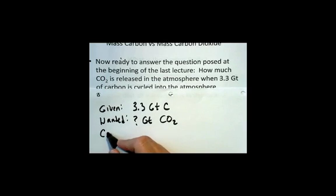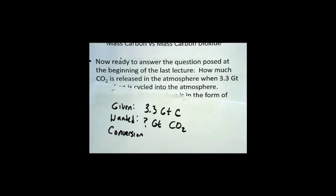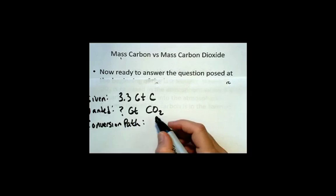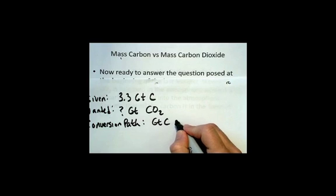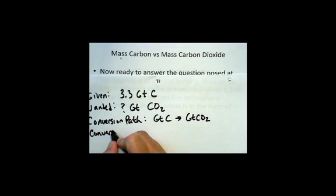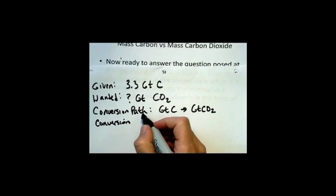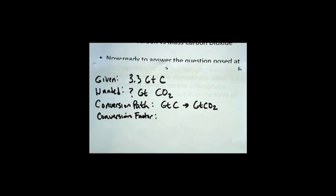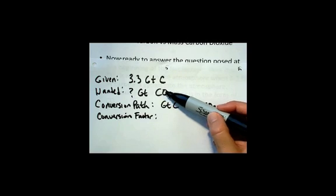We're going to have to just do a conversion. The conversion path is going to be from gigatons of carbon to gigatons of carbon dioxide. The conversion factor that we're going to use is this concept that in a pure substance, in a compound, the number ratios of the different elements within the compound are fixed and the mass ratios are fixed.